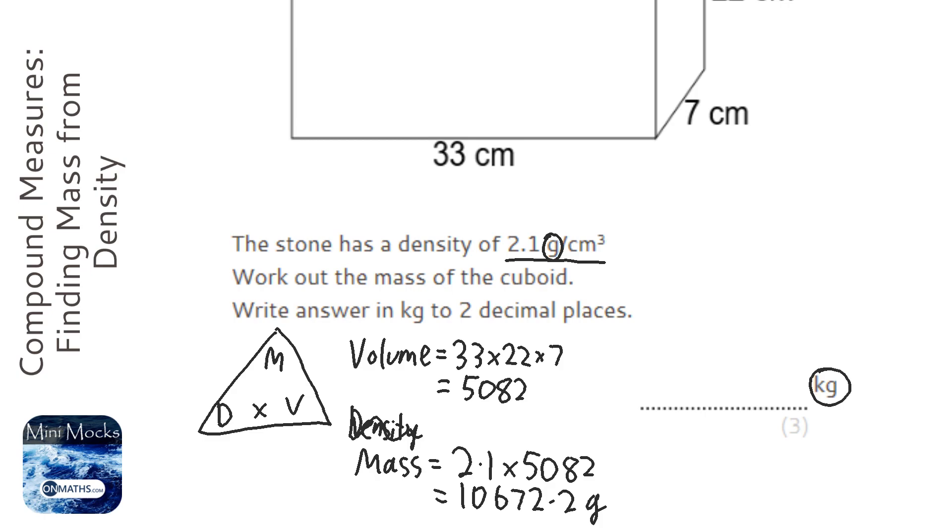Dividing by a thousand to get it in kilograms, and it says to two decimal places, so it's going to be 10.67.